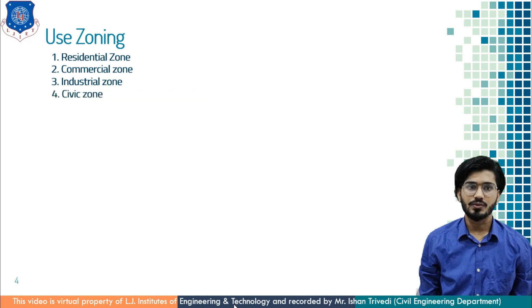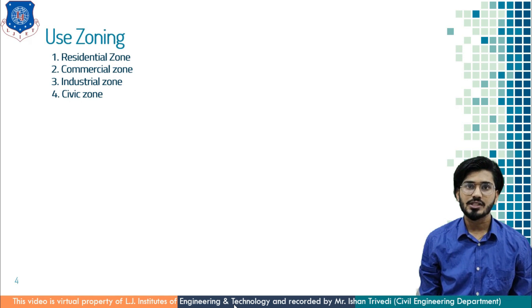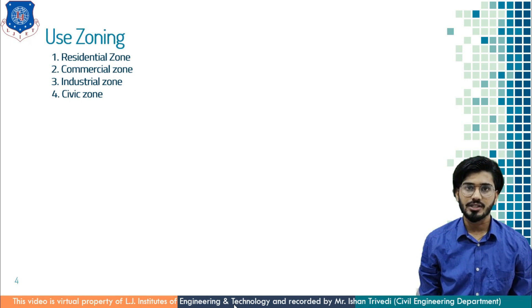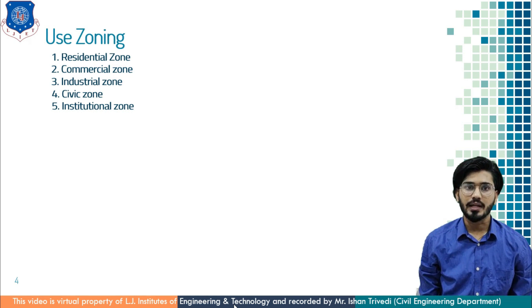Next is civic zone. This zone contains all public and semi-public buildings like post offices, banks, civic centers, offices, courts, public libraries, etc., and should be located near the residential zone. Next is institutional zone. This zone contains schools, colleges, institutions, etc., and should be located in peaceful surroundings near the residential zone and away from the business or industrial zone.